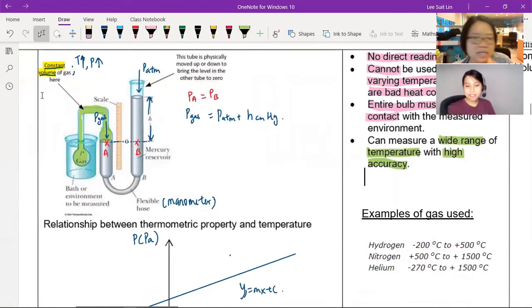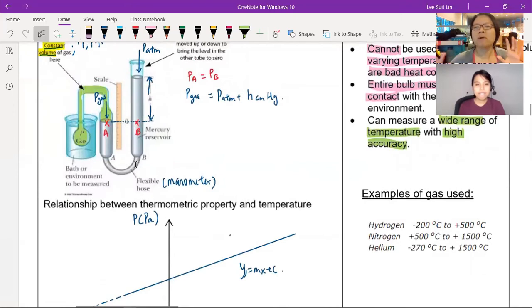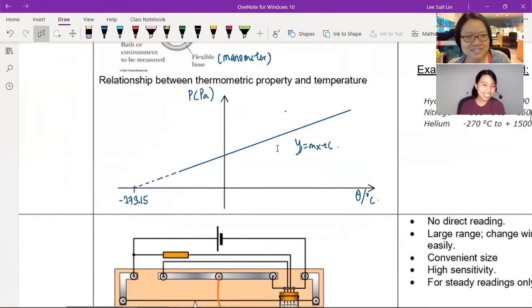What other advantage or disadvantage? Number two, cannot be used to measure varying temperature. Why? You see the bulb there, round bulb, all the gas inside. Gas take very long time to heat up or cool down. So you stick inside the water, then you slowly wait. They are bad heat conductors. So if something, if some temperature is changing very quickly, you won't see it. Number three, whole bulb must be inside, it must be in thermal contact with what they're measuring. So if your bulb, half of the bulb in the liquid, the other half is not, then something wrong, you know. But I guess the nice thing is, like we mentioned, you can measure a wide range of temperature. You just change the gas. Yeah, the gas pressure will change accordingly. And there's high accuracy.